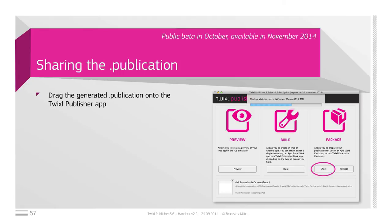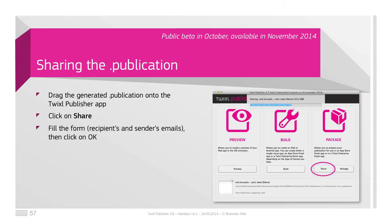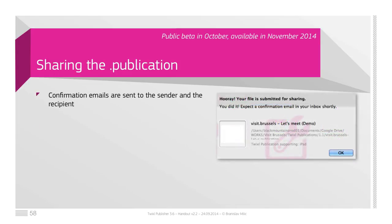Once your publication is ready to be shared, you just export it as a .publication from InDesign. Then you drag and drop the publication file onto the Twixel publisher app and click the share button. This button appears on the third panel — the panel package — and then you fill the form with the recipients' and sender's emails and click OK. After a few seconds, confirmation emails are sent to the sender and recipient, confirming that your file is submitted for sharing.